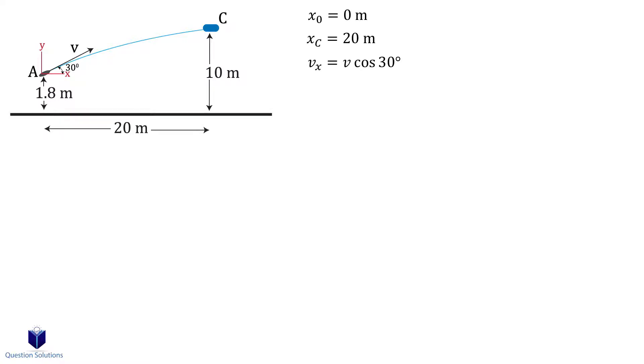For the vertical direction, the starting location is at 0 meters. Location C is at 8.2 meters. Our coordinate system is situated at location A which is where the projectile is fired from. So remember that it's 10 meters minus 1.8 meters.